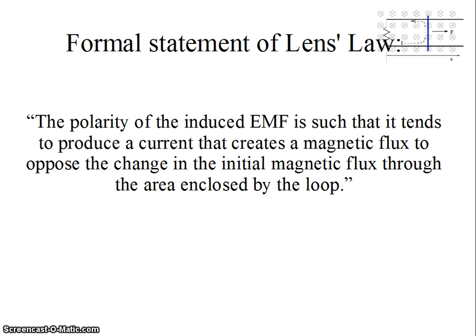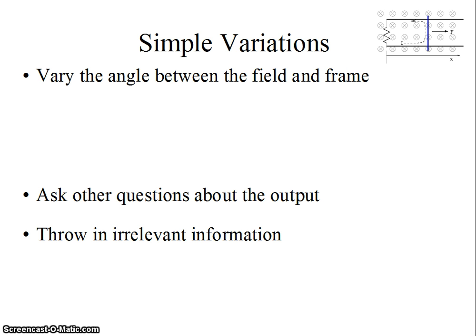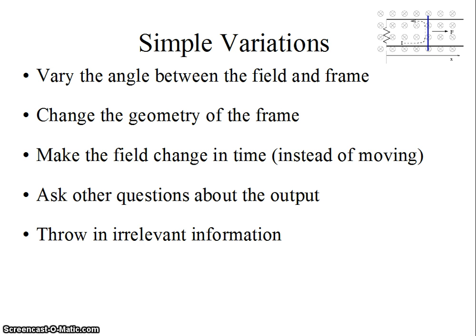I can formally state Lenz's law, as I did in class. You read it then. You can read it again. But if I want simple variations, the simplest ones are to throw in irrelevant information, which you know I love to do, or to ask other questions about the output. I could also vary the angle between the field and the frame. That gives you an extra cosine theta term in the calculation of flux. I could change the geometry of the frame. It doesn't have to be a rectangle. It actually sounds like a nice option to me. I could make the field change in time instead of moving a piece of the frame. It's time derivative of flux. So field times area is what matters.